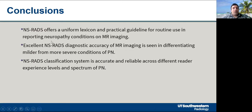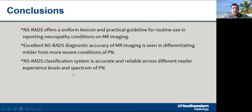In conclusion, NSRADS offers a uniform lexicon and practical guideline for routine use in reporting neuropathy conditions on MR imaging. Excellent NSRADS diagnostic accuracy is seen in differentiating milder from more severe conditions of peripheral neuropathy. The NSRADS classification system is accurate and reliable across different reader experience levels and the full spectrum of peripheral neuropathy.